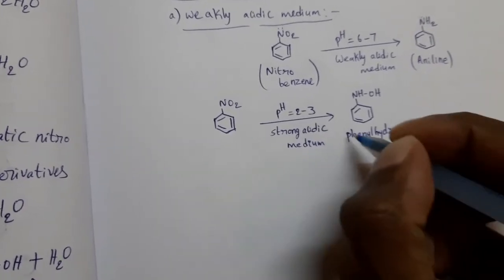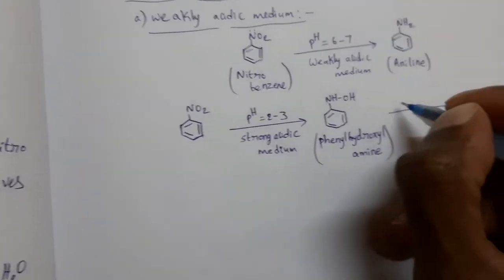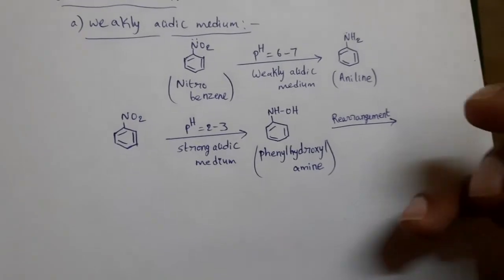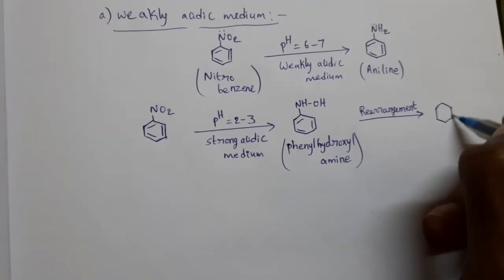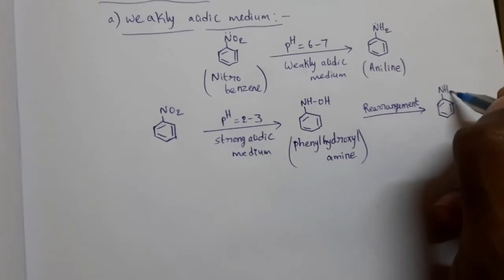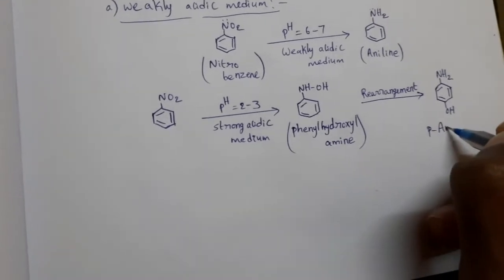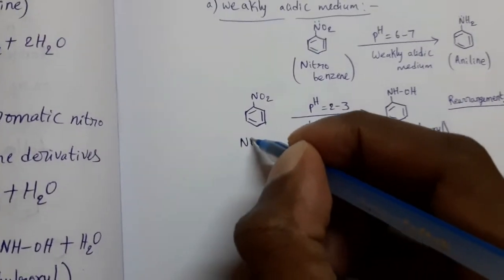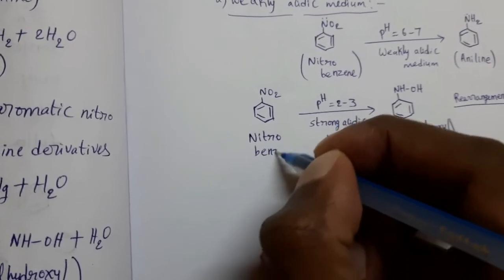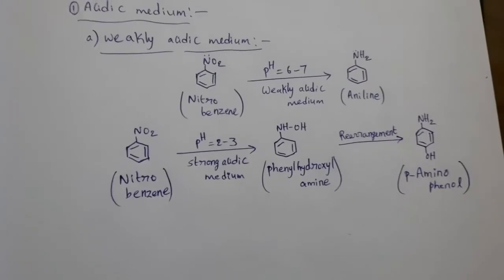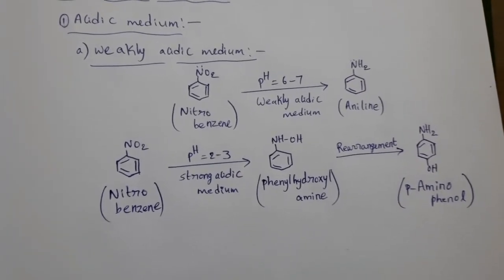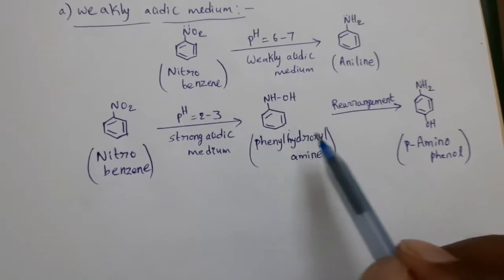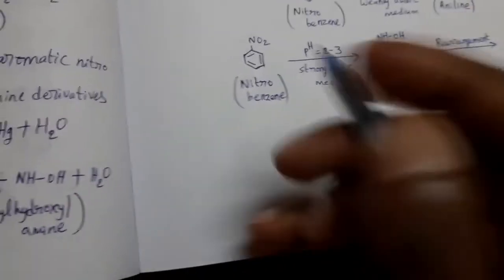This compound undergoes rearrangement, and then we can get para-aminophenol. So in weak acidic medium, nitrobenzene undergoes electrolytic reduction and forms aniline. In strong acidic conditions, it forms phenylhydroxylamine, which undergoes rearrangement to give para-aminophenol.